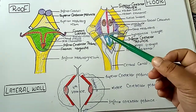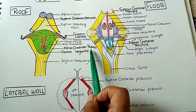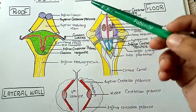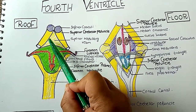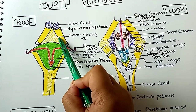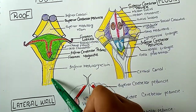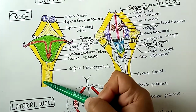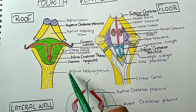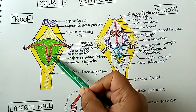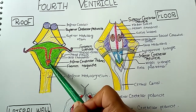The roof of the 4th ventricle is formed by the superior and inferior cerebellar peduncles. The superior part of the roof is formed by the superior cerebellar peduncle and a connecting sheet of white matter that joins these 2 peduncles, forming the superior medullary velum. The inferior portion of the roof is formed by the inferior cerebellar peduncle and a connecting sheet of pia mater forming the inferior medullary velum. The inferior portion of the roof is pierced by 2 apertures.